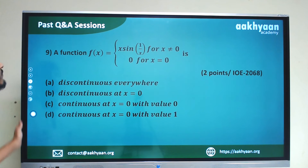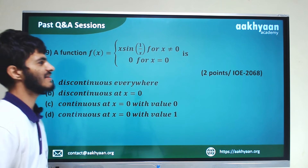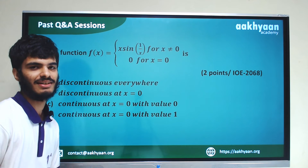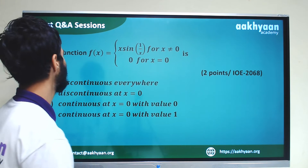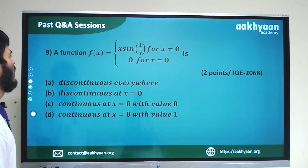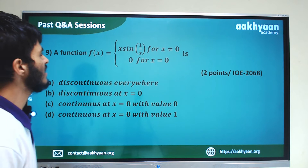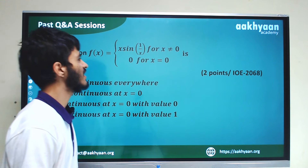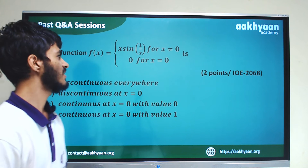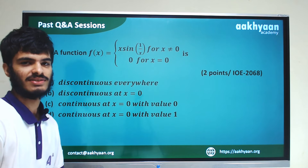In the next question, we are given f(x) equals x·sin(1/x) for x not equal to 0, and f(0) equals 0 for x equal to 0. We need to check whether this function is continuous at x equal to 0.